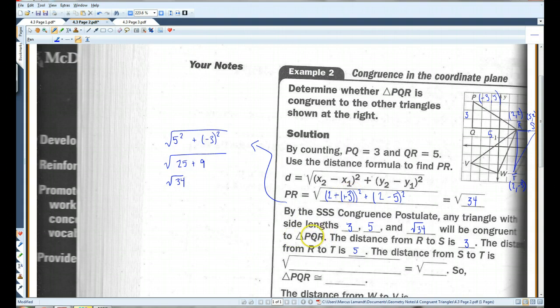So, this distance is going to be 2 minus 5 squared plus negative 3 minus 2 squared. And I'll do this over here. 2 minus 5 is negative 3. Negative 3 minus 2 is negative 5. And you can kind of already tell that this is going to give you the same thing, but we'll just do it out.